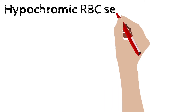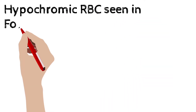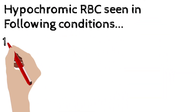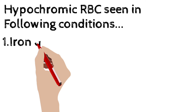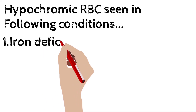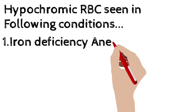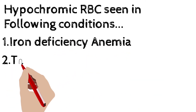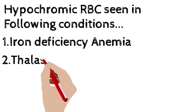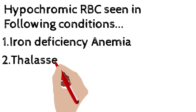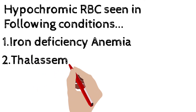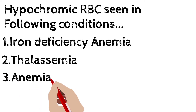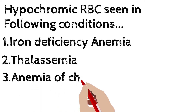The hypochromic red blood cell is seen in the following conditions: first, iron deficiency anemia; second, thalassemia, like hemolytic anemia; and third, anemia of chronic disease.